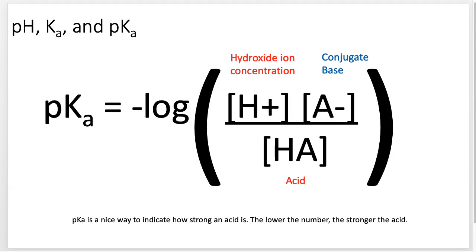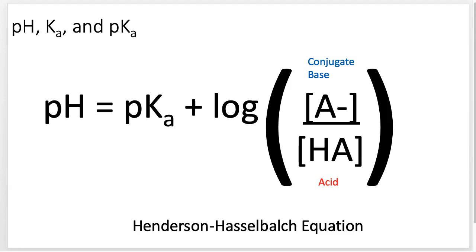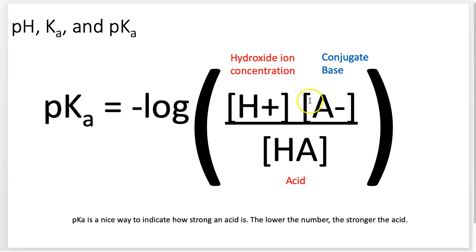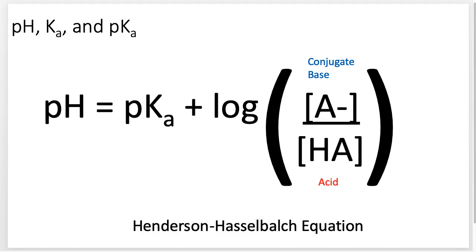The other thing I want to talk about is the Henderson-Hasselbalch equation. That's how we can associate these two things together. I can associate my pH — the actual number of hydrogen ions — with my pKa, which is the negative log of Ka. Then I also include the log of the ratio of my acid to its conjugate base. If you've taken general chemistry you probably did equations involving this, but we won't spend too much time on it.